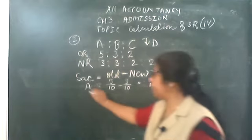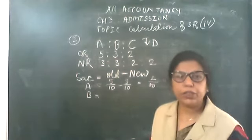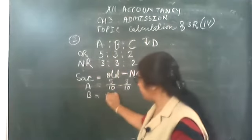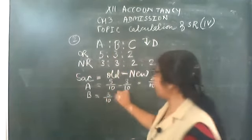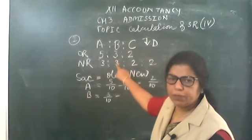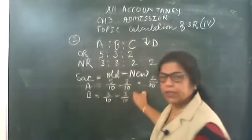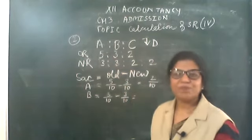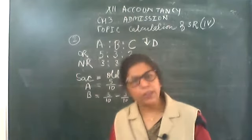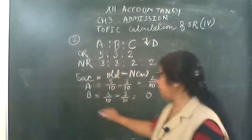Now B — what is B's old ratio? It is 3/10. And what is B's new ratio? Also 3/10. So 3 minus 3 equals 0. It means B is not sacrificing.